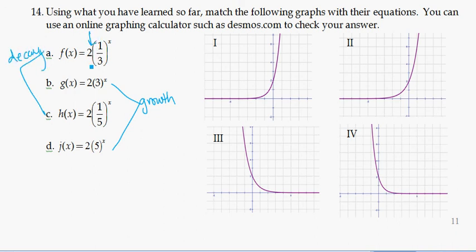Notice that all of these have a y-intercept of 2. So all the graphs have a y-intercept of 2. So I can tell which ones. These two are growth, these two are decay. But how am I going to know which one is 3 to the x versus 5 to the x, for example?